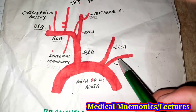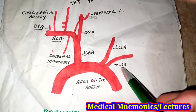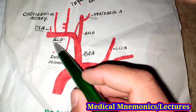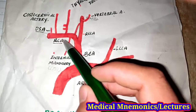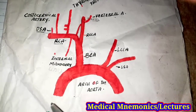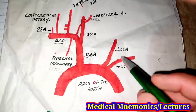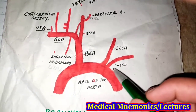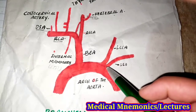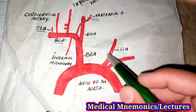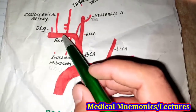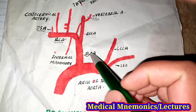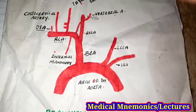There are two subclavian arteries — one is the left subclavian artery and the other is the right subclavian artery. The left subclavian artery directly arises from the arch of the aorta, and the right subclavian artery arises from the brachiocephalic trunk, or brachiocephalic artery.